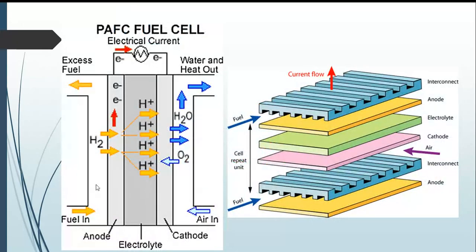This figure shows the working principle: hydrogen ions pass through the electrolyte moving from the anode to the cathode side. At the cathode, in combination with oxygen and electrons, water is formed and released outside. The cell layers are: fuel input side, interconnect, anode, electrolyte layer, cathode, and air supply side.